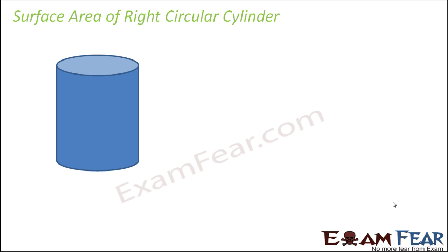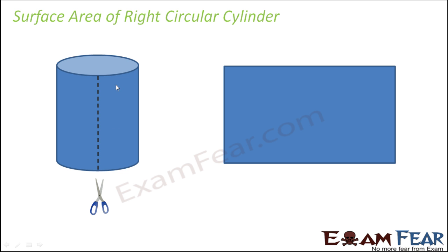Let's find the surface area of the right circular cylinder through an activity — please do it yourself also. Take a cylinder formed by paper, or any cylindrical object you have. You cut it by drawing a line along one side and then cutting along it. This is a hollow cylinder — once you cut and open it up from both sides, you get a rectangular sheet.